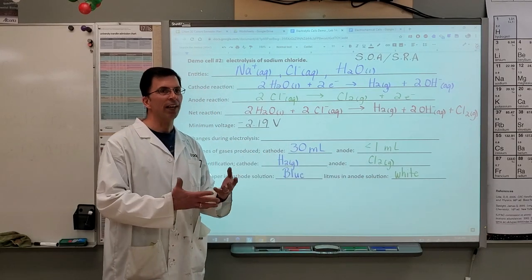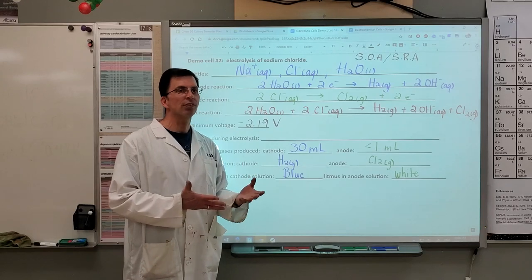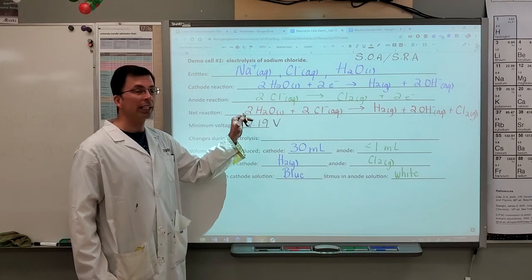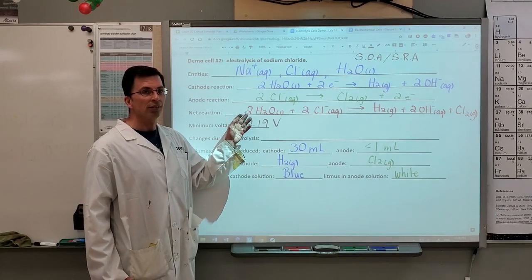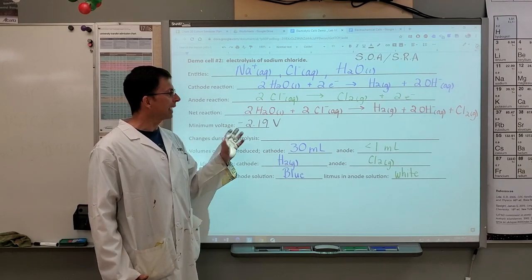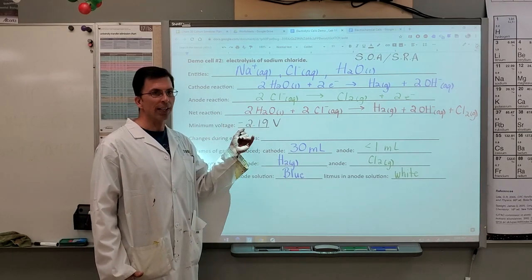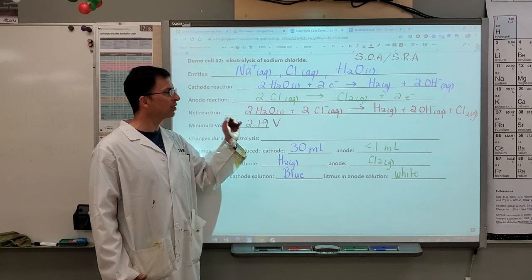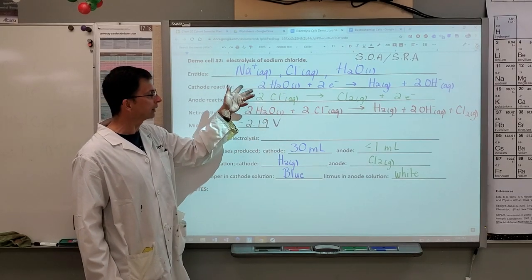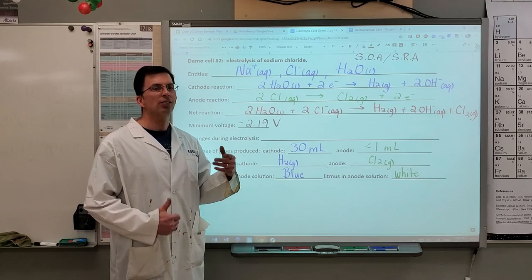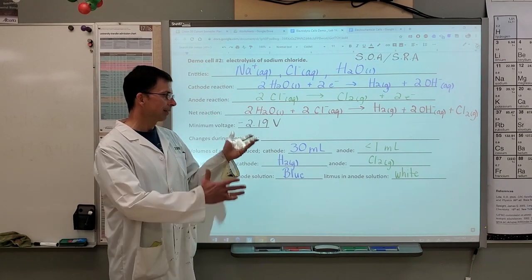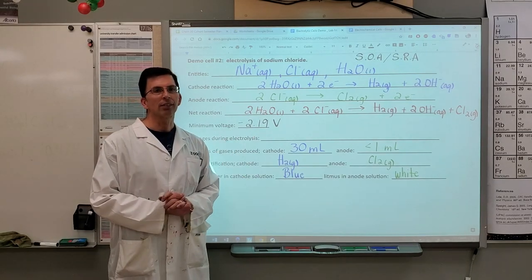That alters our overall reaction, our net reaction as you can see. The minimum voltage required would be negative 2.19 volts. That's just the standard cell potential that we obtain by taking the difference in reduction potentials between our two half reactions. This explains the chloride anomaly. Something different is happening. We're getting some different results at the anode making this different than the sodium sulfate cell.